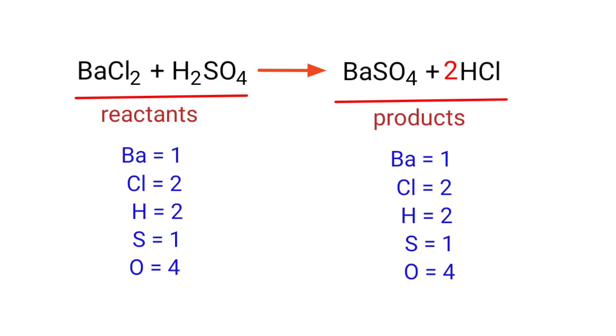The equation is now balanced. There are 1 barium atom, 2 chlorine atoms, 2 hydrogen atoms, 1 sulfur atom, and 4 oxygen atoms on both sides.